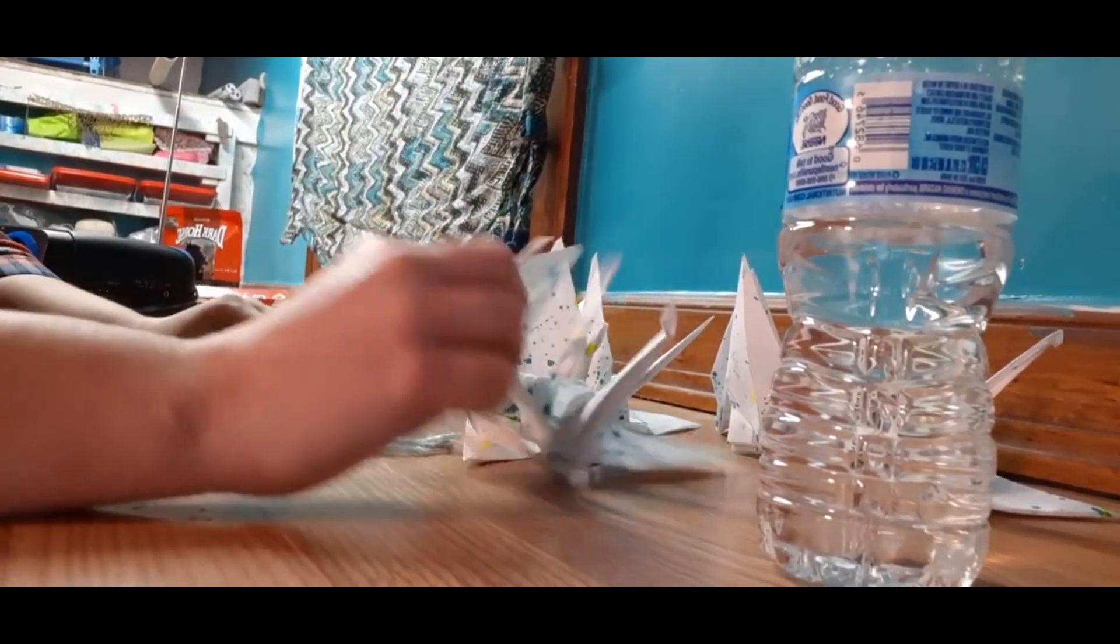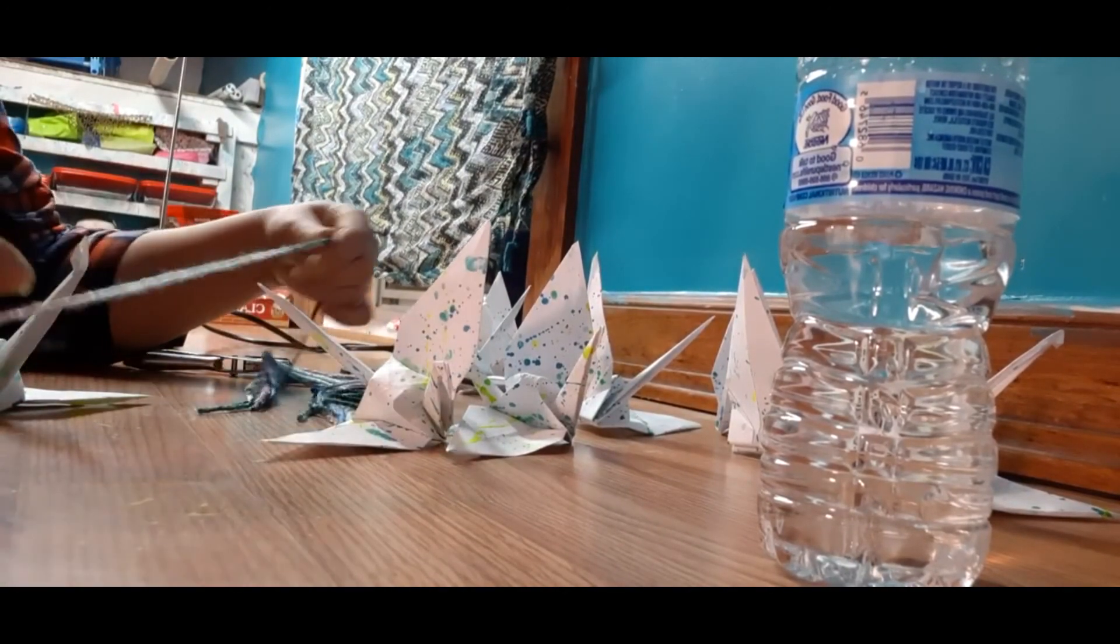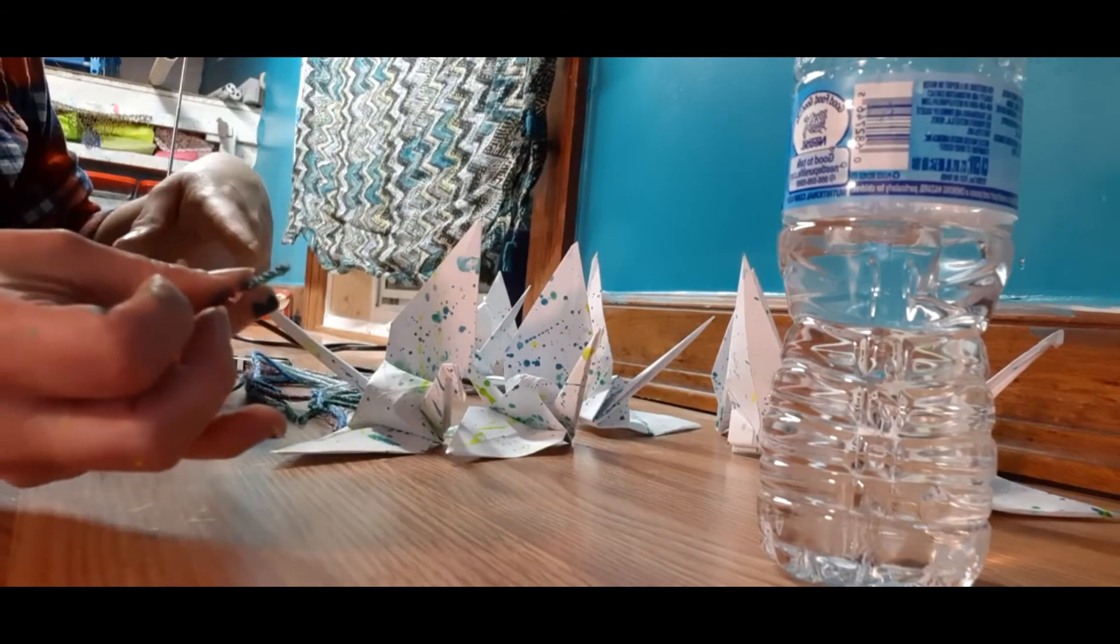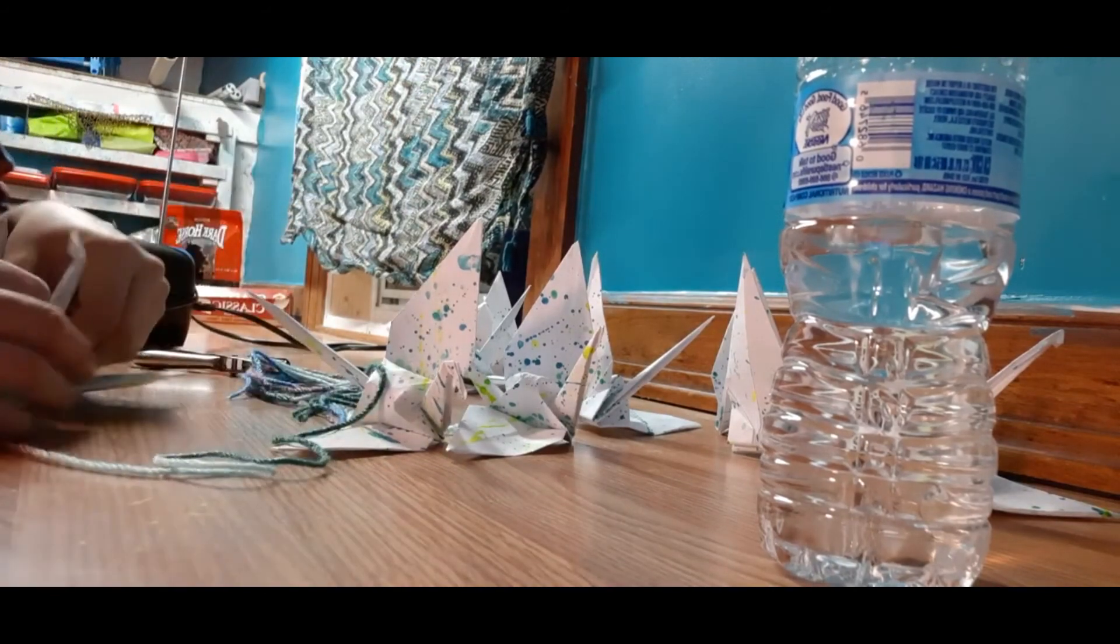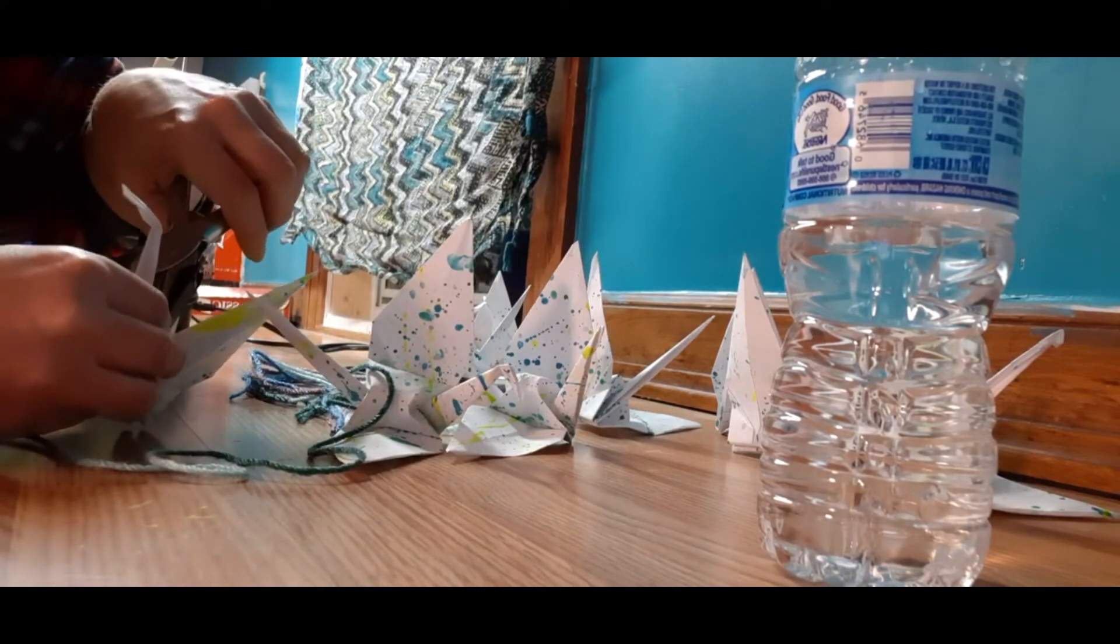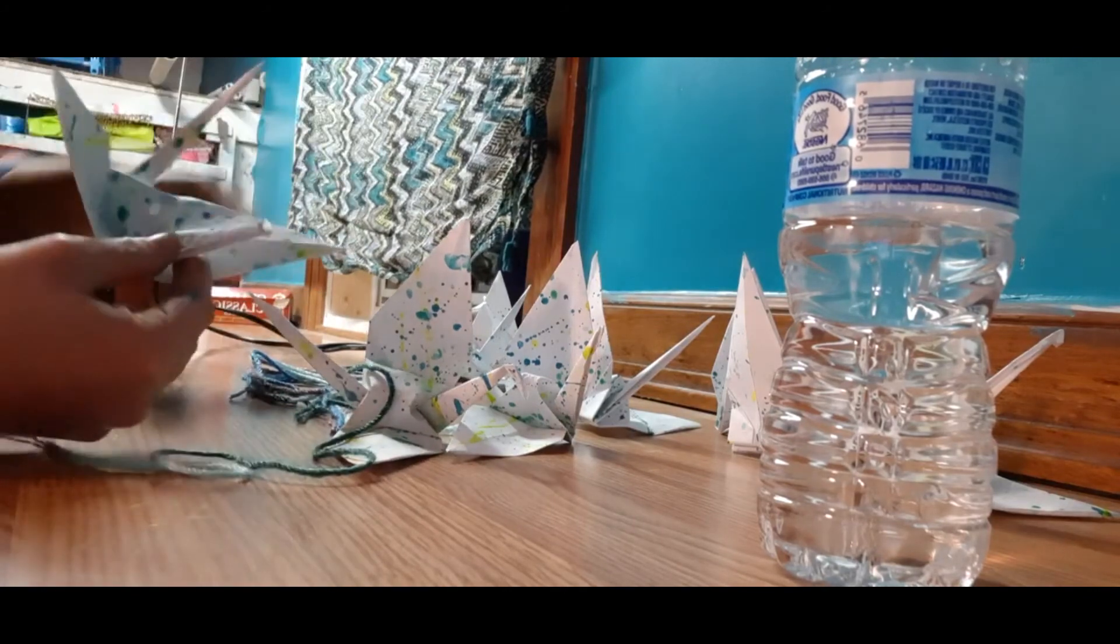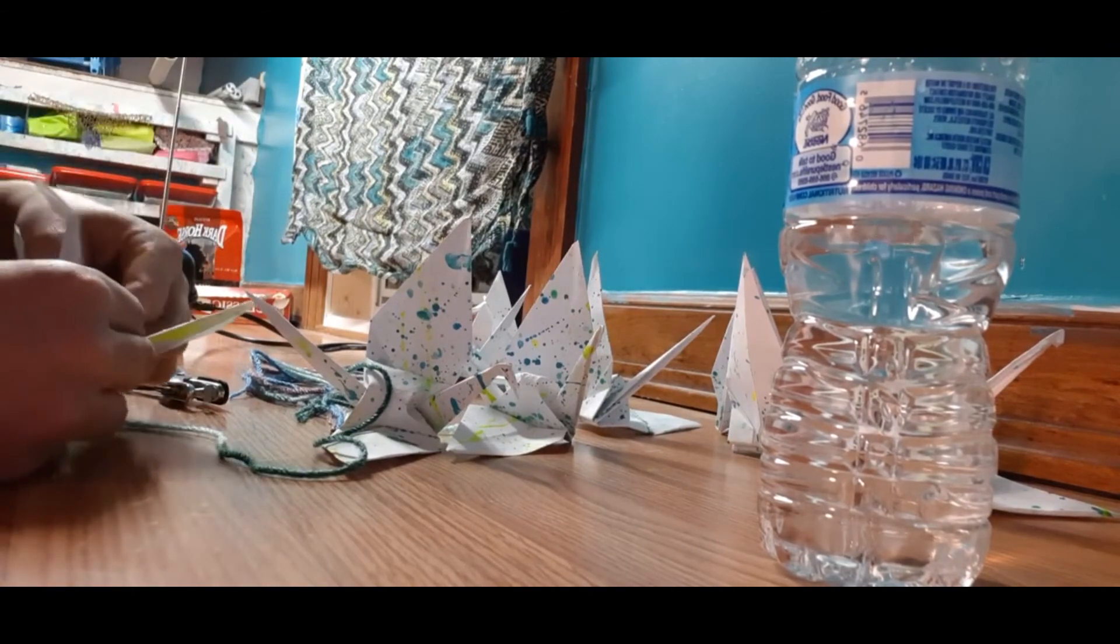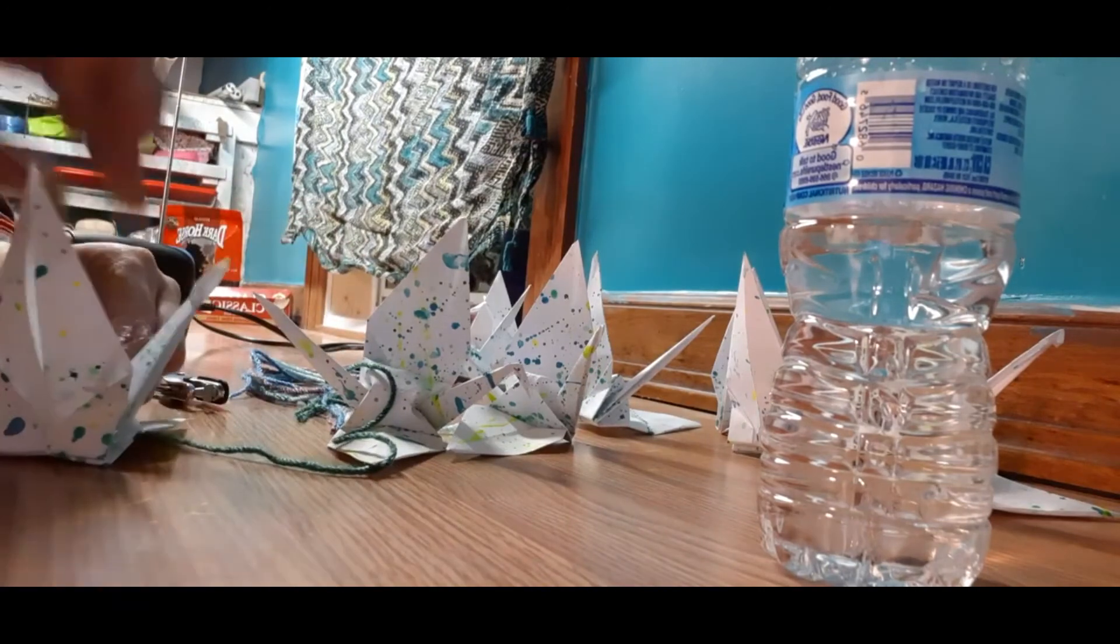Alright, so all we're going to do now is I've got some neon yarn to cut to about the length that I want to hang from my nail up in my ceiling. I've got a hole puncher and all we're going to do is just punch a hole right in the middle of this paper crane back, just like that. Then I'm going to put this through and double tie it and trim off the excess and hang it from the nail.